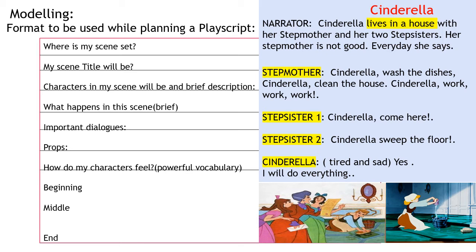Here you can see a format to be used while planning a play script. The format has the following sections: Where is my scene set? My scene title will be. Characters in my scene will be, along with a brief description about the characters. What happens in this scene? Important dialogues. Props that are used in the play script. How do my characters feel? And the last part is the beginning, middle and end of the play script.